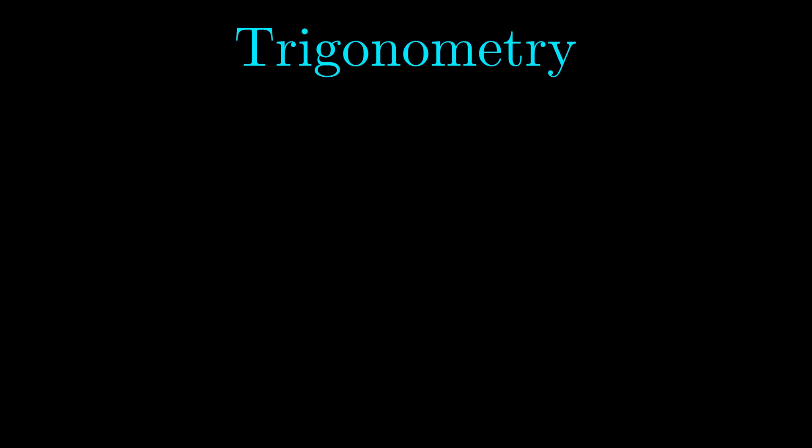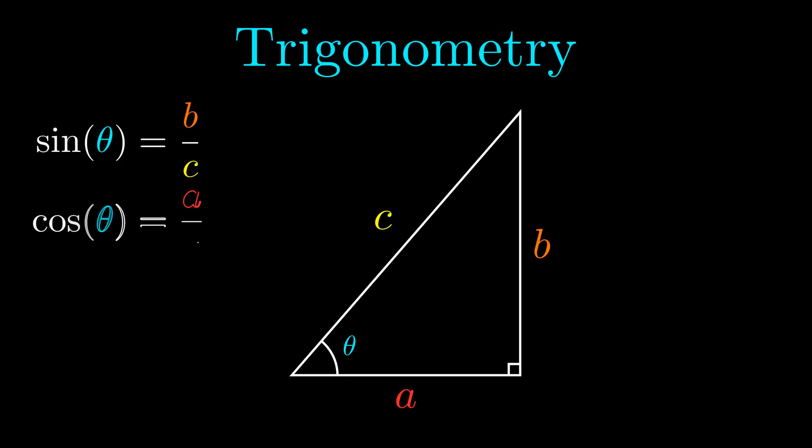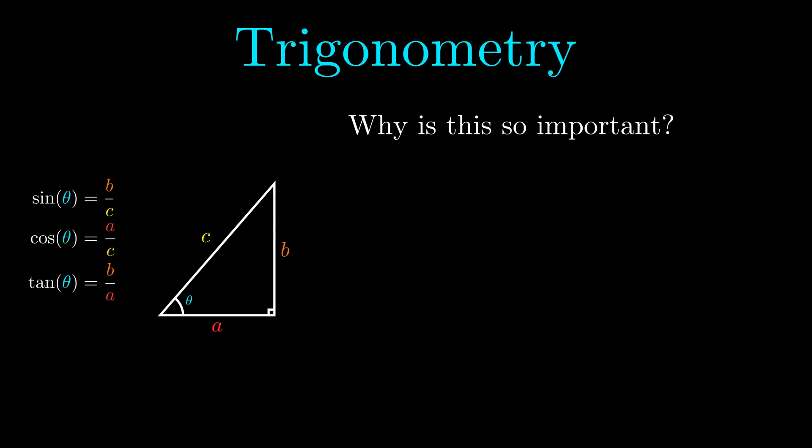Trigonometry is a subject traditionally taught as the study of angles and triangles. While it's true this is how the subject was discovered historically, these days we use ideas from trigonometry in many other areas that have little to do with geometry. While learning trigonometry, students might be asking questions like: why is this so important, and why do we use radians instead of degrees?